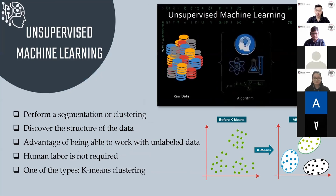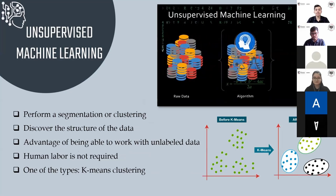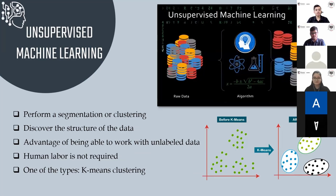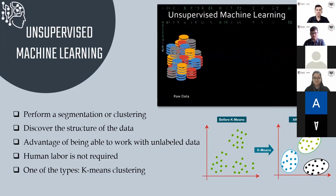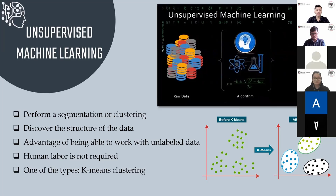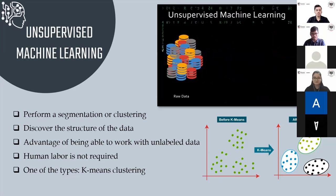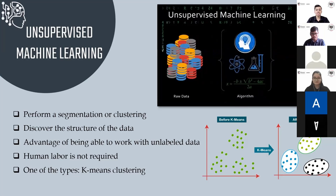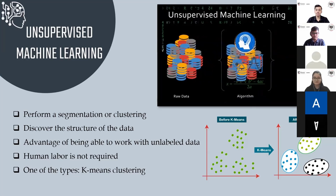Learning without a teacher is unsupervised machine learning. There are times when you don't want to predict an outcome exactly — you just want to perform segmentation or clustering. The task in unsupervised learning is to discover the structure of the data. It works with unlabeled data, meaning human labor is not required to make the dataset machine-readable. There are no labels or correct outputs. One type of unsupervised algorithm is k-means clustering, used to solve clustering problems in machine learning or data science.